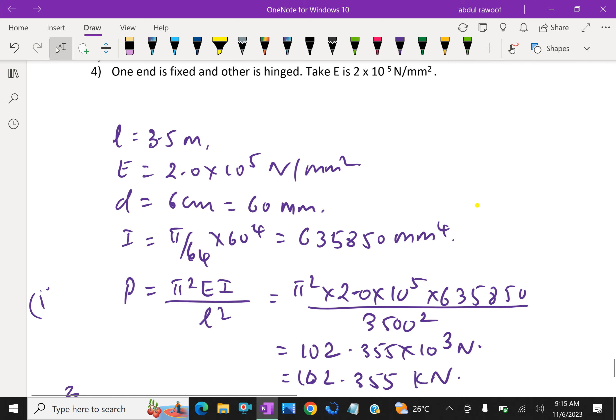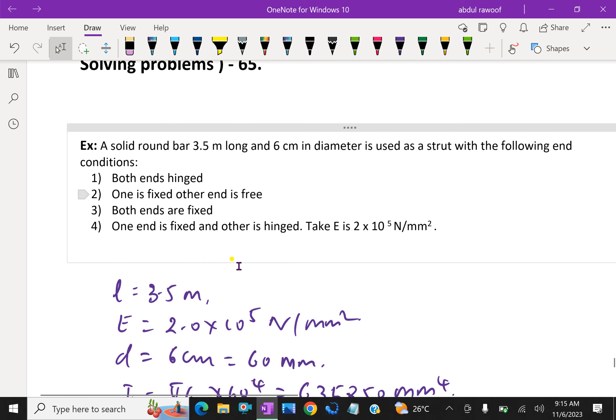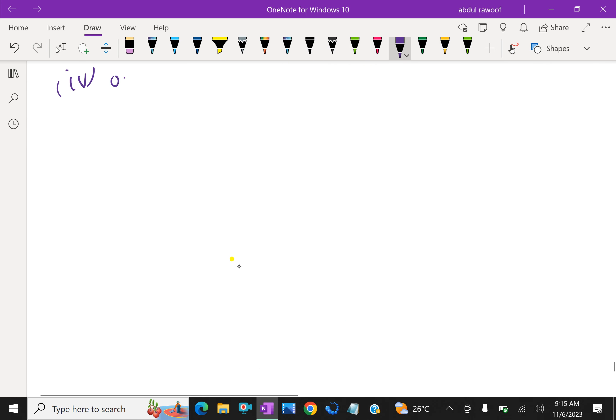Then fourth part is one end is fixed and other end is hinged. For this, L_e equal L by root 2. Therefore, P equal root 2 square is 2, that is 2 times 102.355 equal to 204.7 kN.